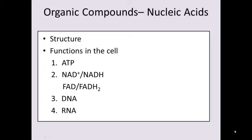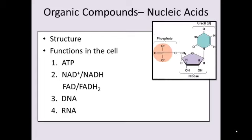On to the nucleic acids. Nucleic acids are made up of nucleotides, which are the monomers of nucleic acids. Nucleotides are composed of a five-carbon sugar called ribose, a nitrogenous base, and a phosphate group. Together, the phosphate group, the sugar, and the base make the nucleotide. You can change these bases — there are five different bases — to make the different nucleotides.